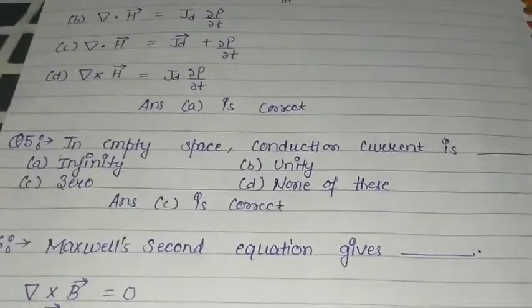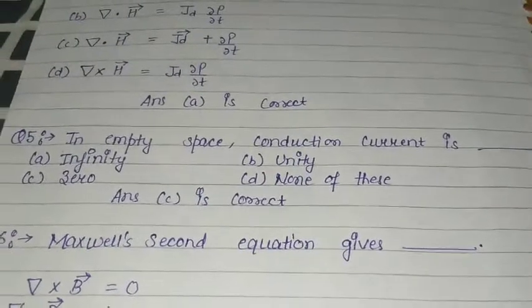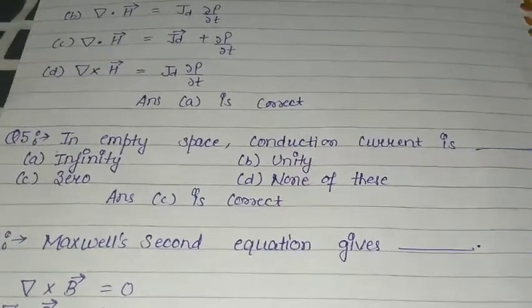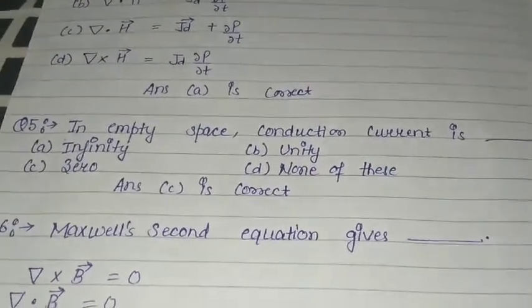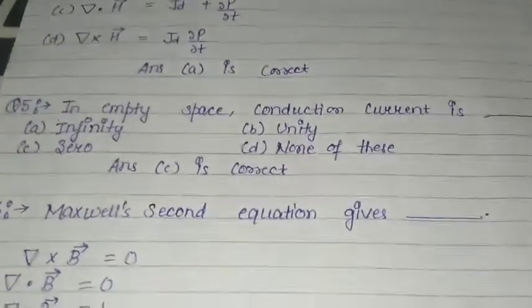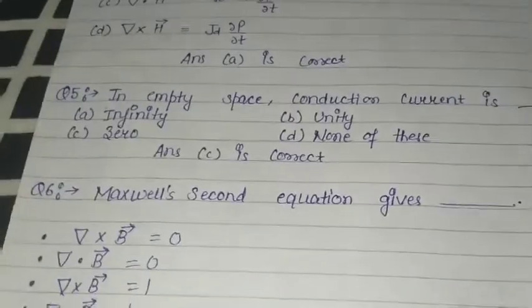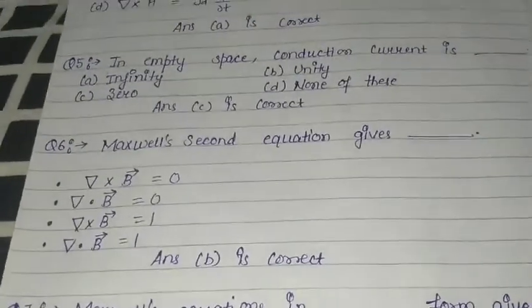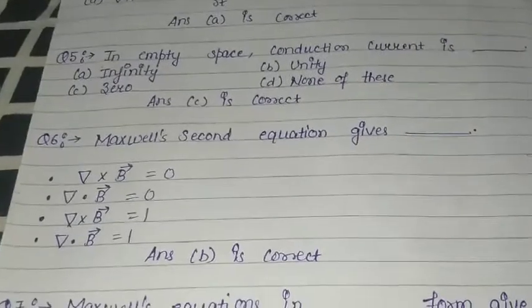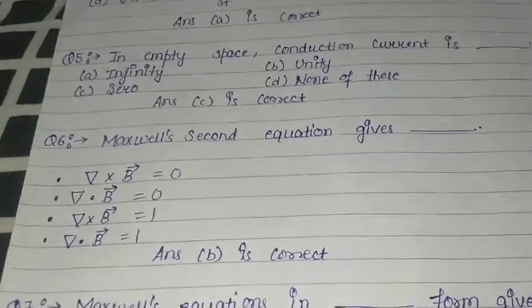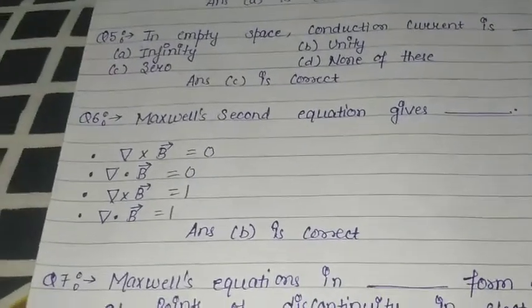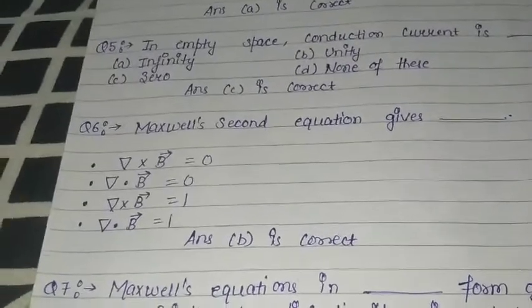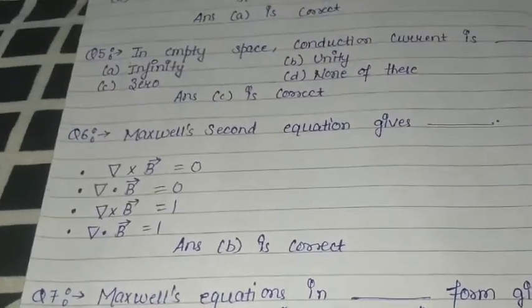Question number five: In empty space, conduction current is — A. infinity, B. unity, C. zero, D. none of these. Here zero is the correct answer. Question number six: Maxwell's second equation gives — from these four options, option B is the correct answer: del dot B is equal to zero.